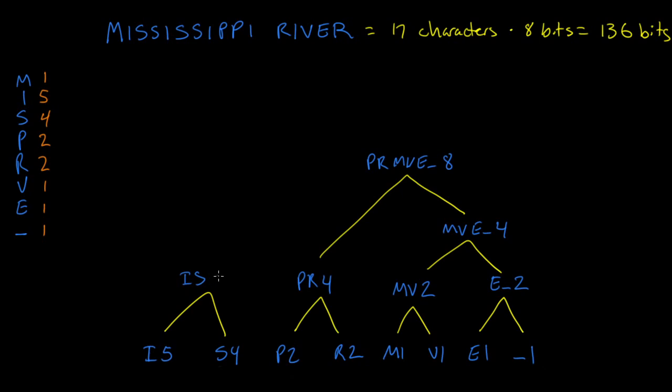Now we've got nine and eight. Merge those together: I, S, P, R, M, V, E-space with a total of 17. A good double check is to make sure this number here, 17 at the very top, is equal to the total number of characters in our original. And also it equals the sum of all these numbers here on the left-hand side.